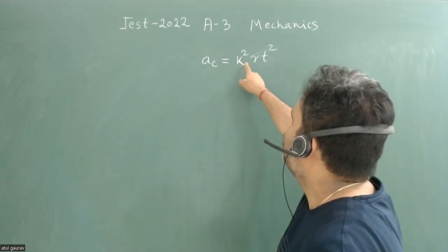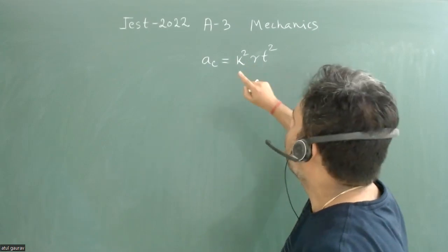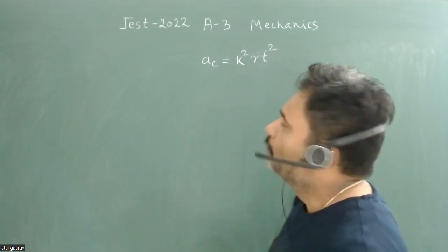The centripetal acceleration is given by k²rt, where r is the radius, t is time, and k is some constant.